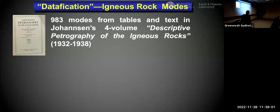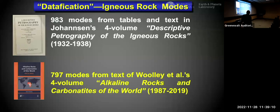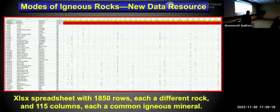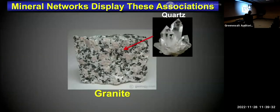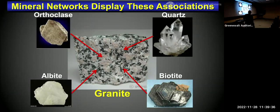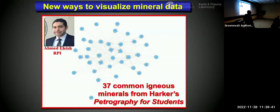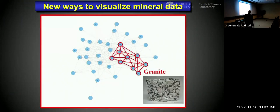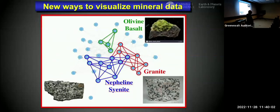Think about a rock with its coexisting minerals as analogous to a social network. Here's the very first network diagram we did back in 2016, working with colleagues at RPI — just 37 common igneous minerals from Harker's Petrology for Students. Each of the 37 circles is a different mineral in an igneous rock and the lines show coexistence. You can see granite, olivine basalt, nepheline syenite — all the common rock types are embedded in this diagram.